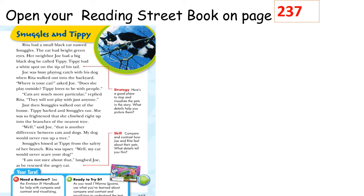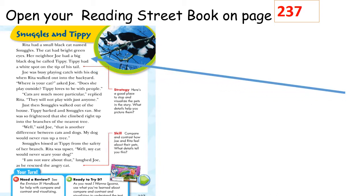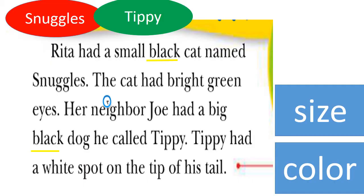Let's first focus on the first paragraph and read it. Keep in mind that we will focus on the two main characters: the first one is Snuggles and the second one is Tippy. Let's start.